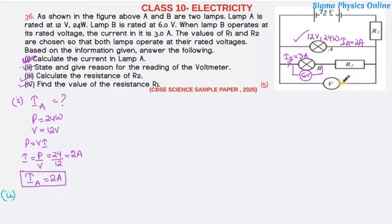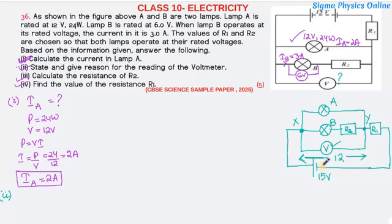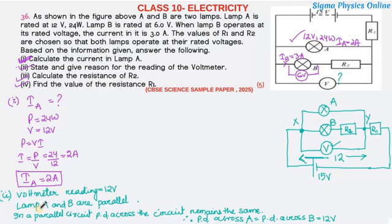The second question asks for the voltmeter reading and the reason for it. In the simplified diagram, lamp A and lamp B are in parallel. Let's call the two parallel points X and Y. In a parallel circuit, the potential difference across the branches remains the same. So the potential difference between X and Y is 12 volt, and the voltmeter reading is 12 volt because the potential difference across A equals the potential difference across B.